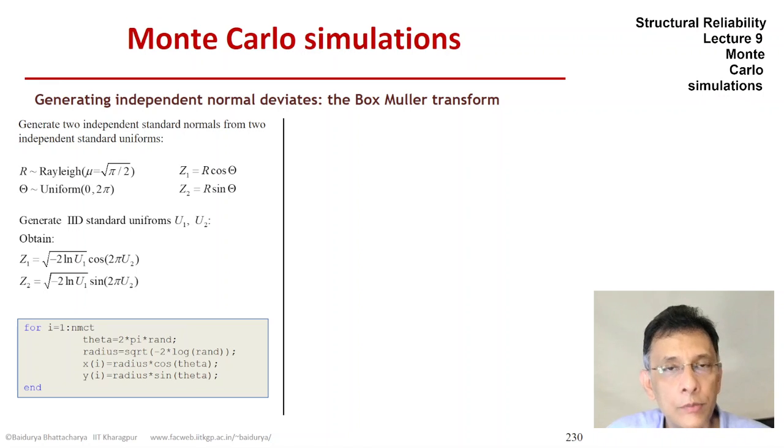Then we generate the radius which is the Rayleigh random variable and that's using the transformation of another rand. Here I have used one minus rand as the same as rand. They're identically distributed. So that gives those theta and r pair, that gives us the x and y coordinates, which would be actually Z1 and Z2.